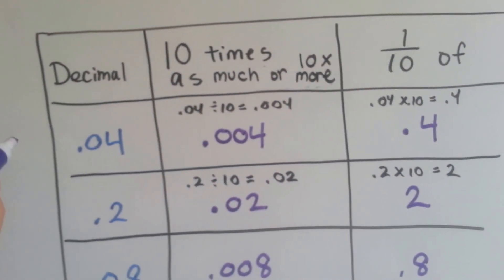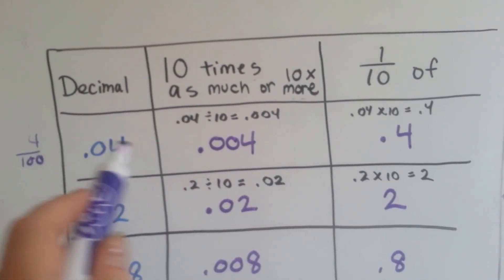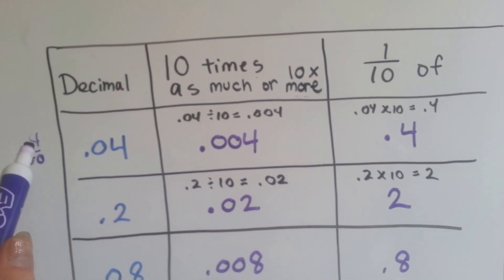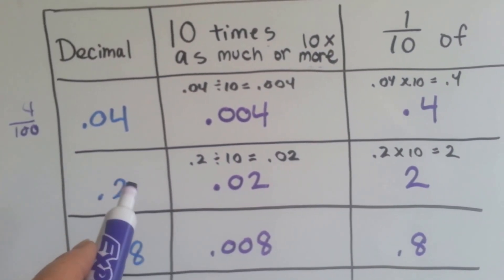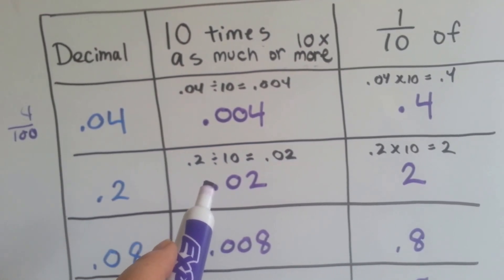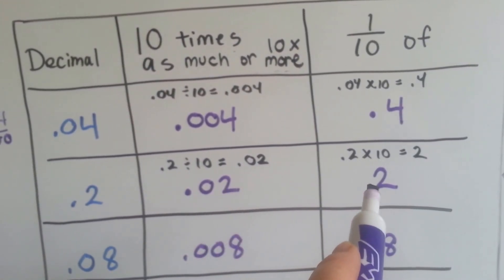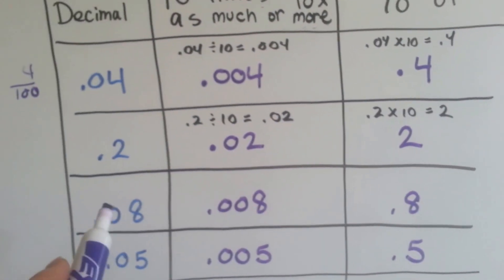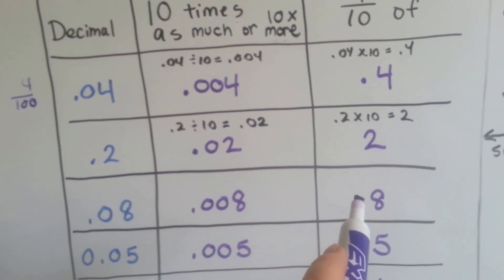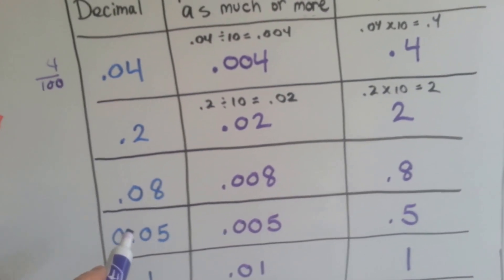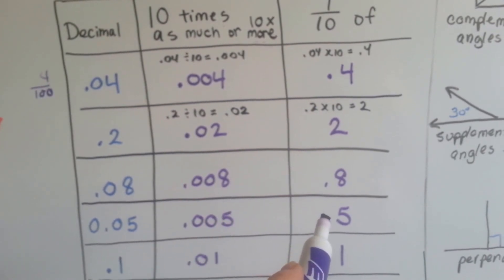This four-hundredths is one-tenth of what? It's saying what number got divided into ten that became that — four-tenths. Here's two-tenths: two-tenths is ten times more than two-hundredths, and it's one-tenth of two. Eight-hundredths is ten times more than eight-thousandths, but it's only one-tenth of eight-tenths. Five-hundredths, written as five over a hundred, is ten times more than five-thousandths, but it's only one-tenth of five-tenths.